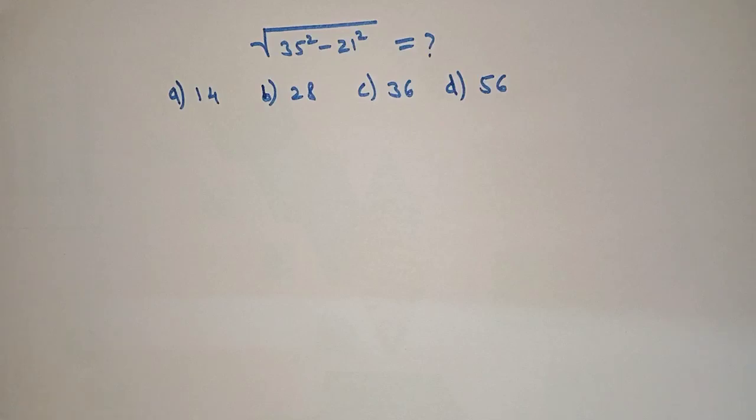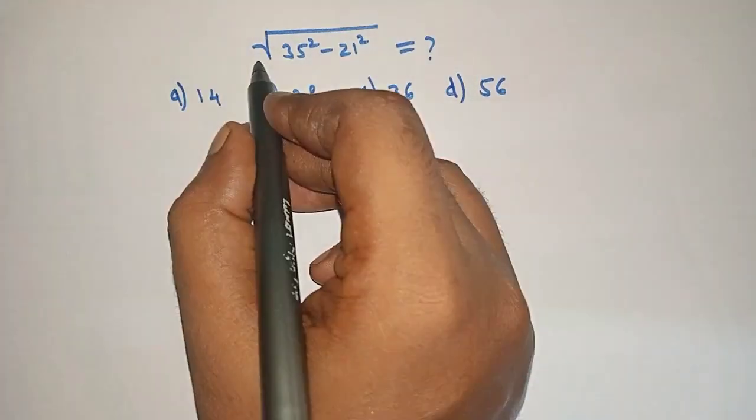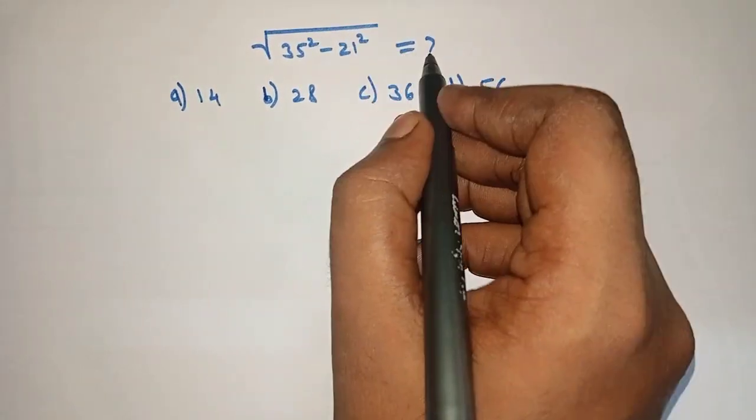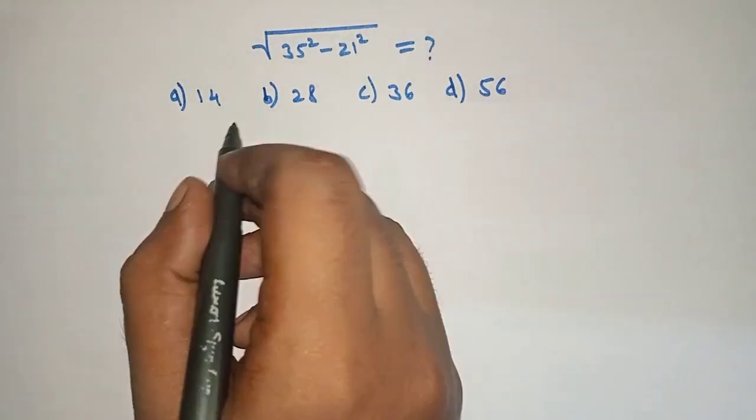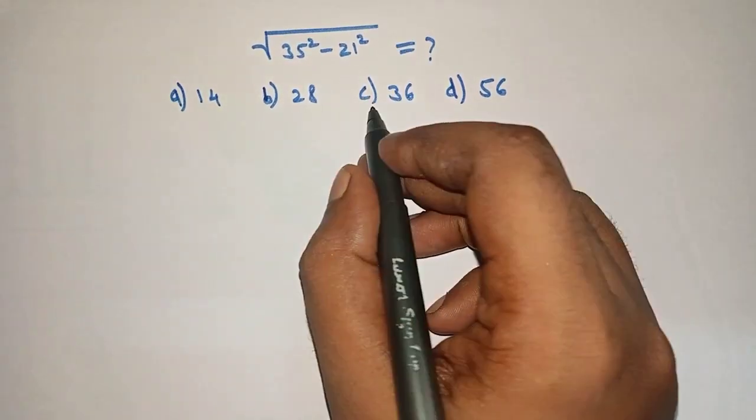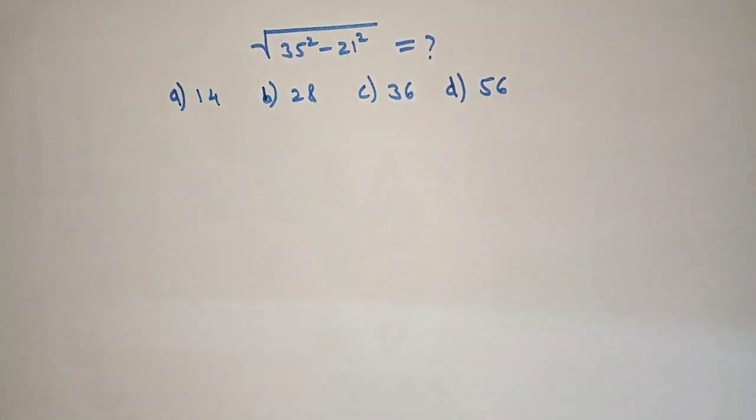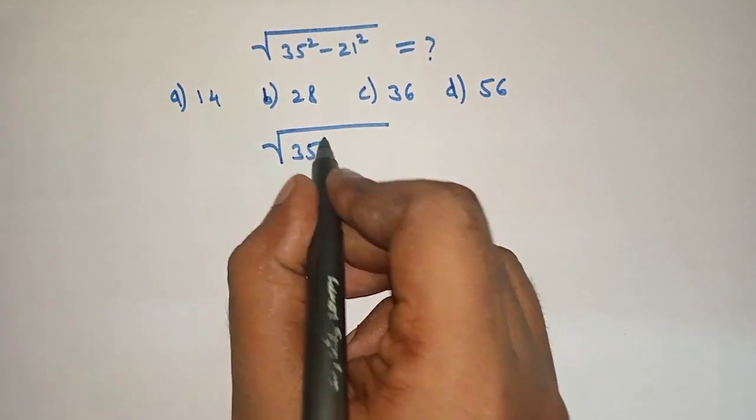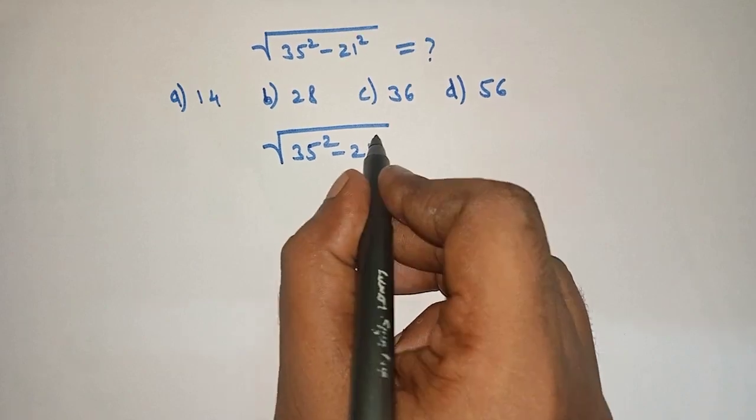Hello friends, welcome to Aha Math. Square root of 35 squared minus 21 squared equals what? Option A: 14, Option B: 28, Option C: 36, Option D: 56. So let's solve square root of 35 squared minus 21 squared.